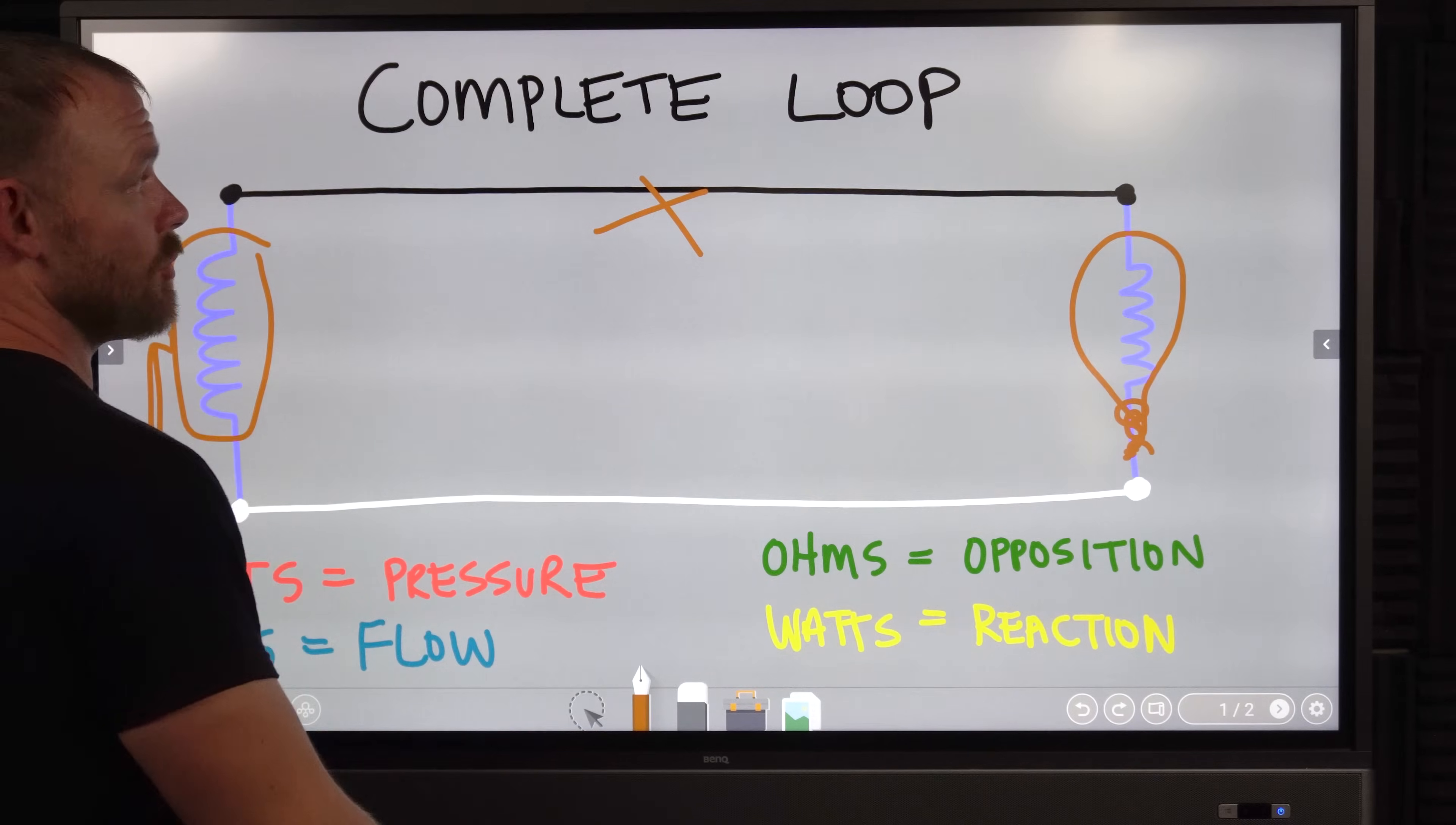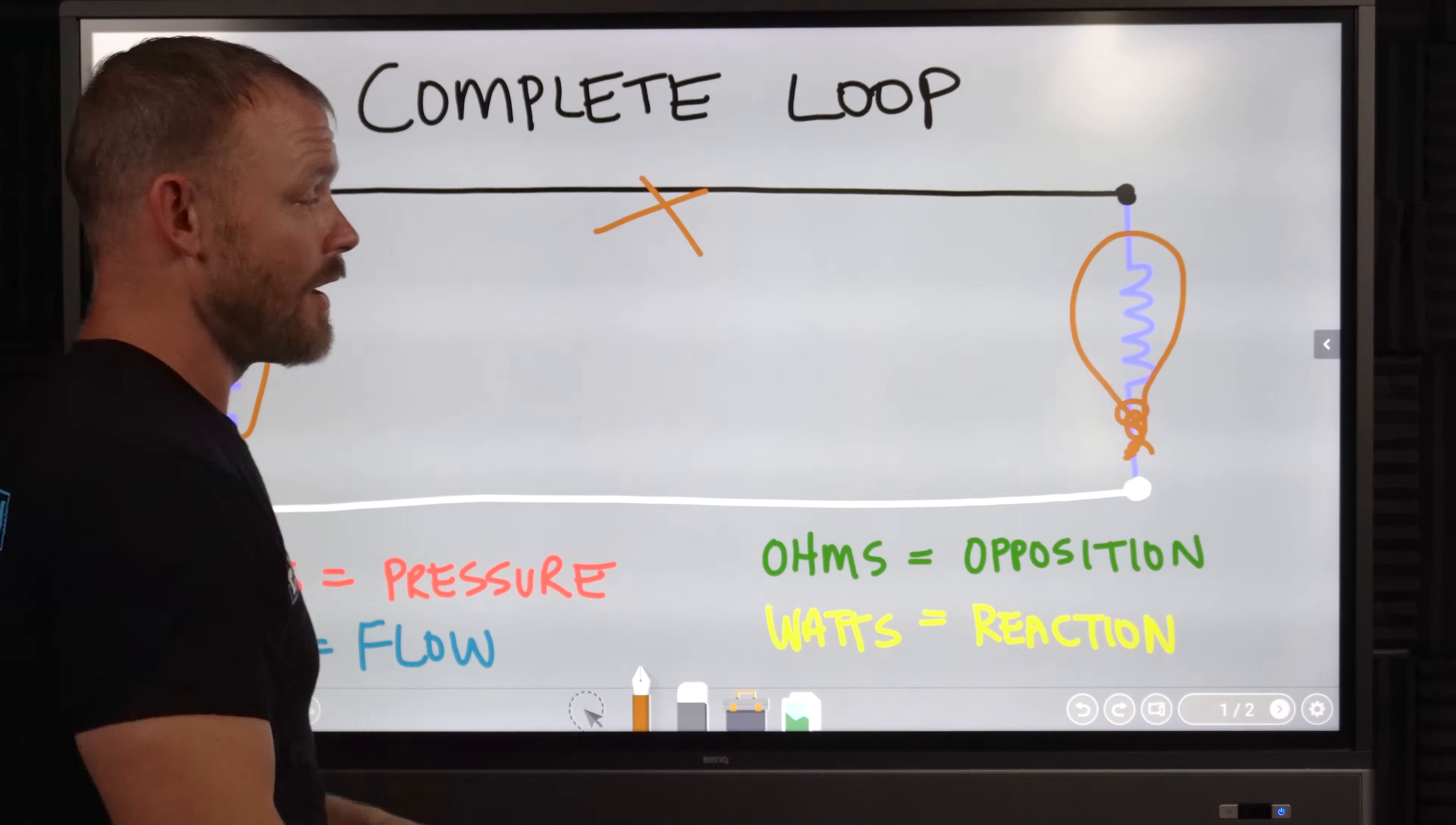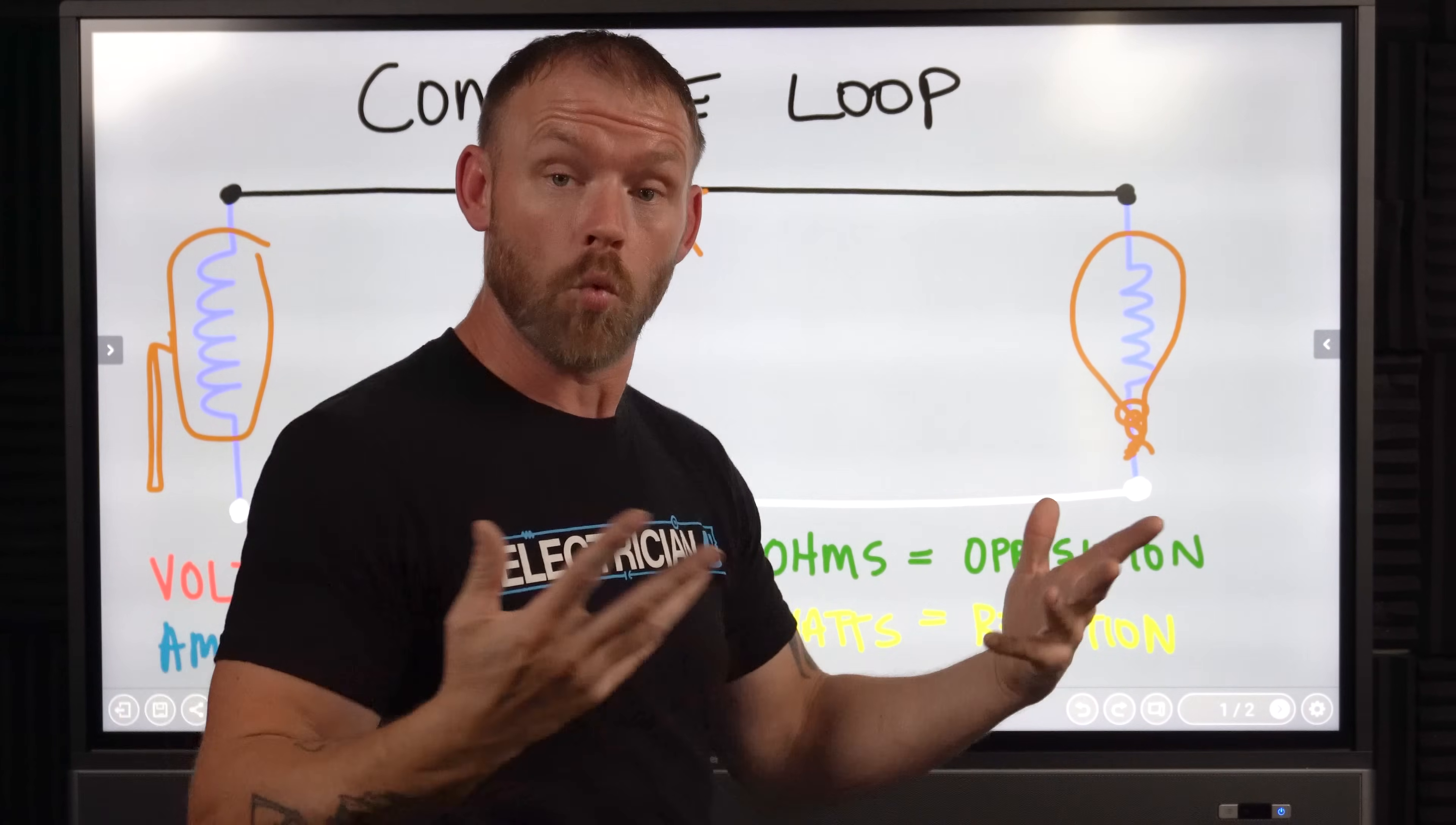If you break this loop and pull it apart, current can't travel through here. There's no flow. The only way current can travel and electricity has any kind of electromotive force is if you have a complete loop. Once you connect a switch, you complete the loop. Light bulb turns on. Once you flip the switch off, switch opens, no more current flow.